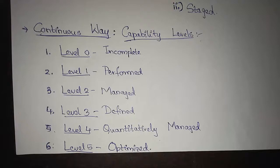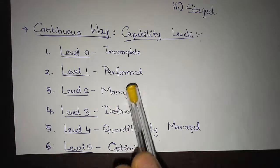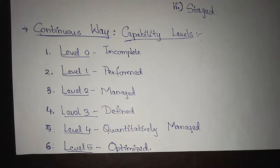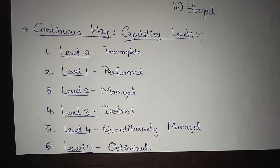Then we have Level 1, which is known as Performed. At the performed level, the process area must have all specific goals satisfied and work tasks required to produce the defined work products completed.